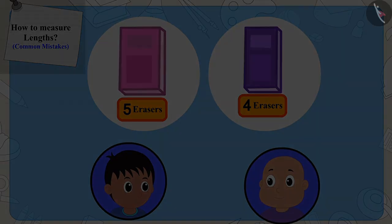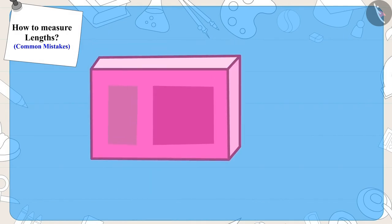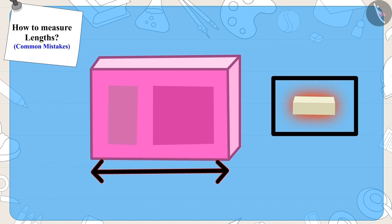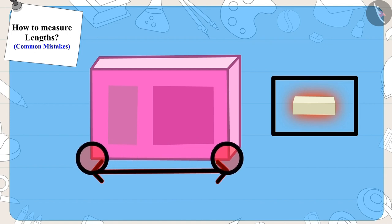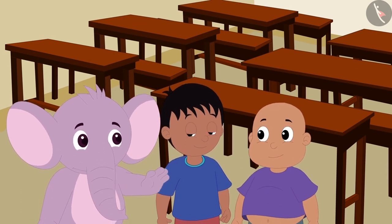Children, remember: whenever we measure the length of an object with the help of another object, we should measure the length from one end of the object to the other end. Appu made Raju and Bablu understand this.